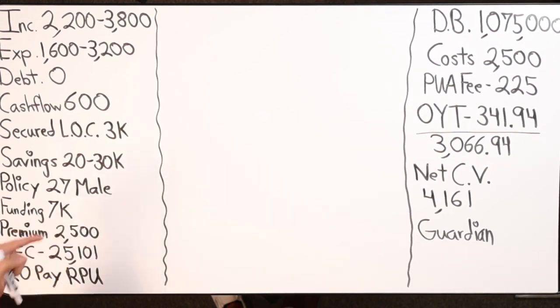Funding $7,000 is the initial amount of money that we're telling Guardian that we want to put in. $2,500 is the premium, which gives us a limit of $25,101. That means we have the ability to put up to $25,000 in any given year as we fund this policy. But you can see a problem, right, which is if he only puts in $7,000 into his policy for the first year, second year, for the third year, then this policy has been poorly designed.